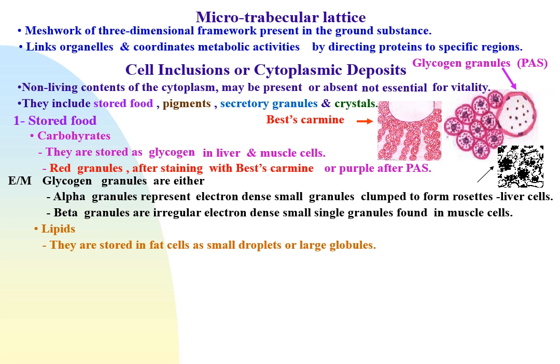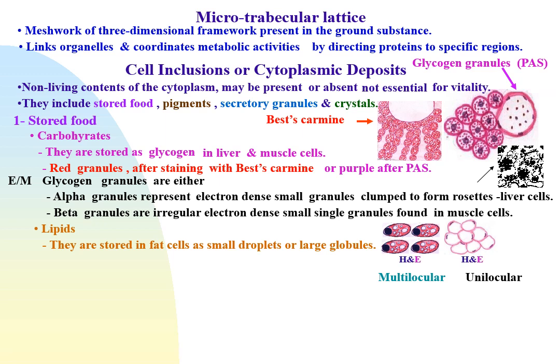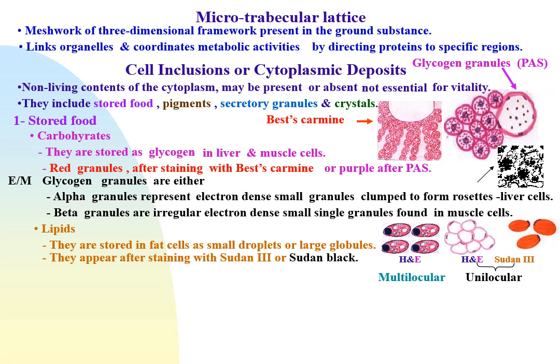Lipids are stored chiefly in fat cells, but many other cell types also store lipid droplets of various sizes. Lipids are stored either as small droplets, as in multilocular fat cells, or as large globules, as in unilocular fat cells. Lipids dissolve in alcohol during hematoxylin and eosin preparation and appear as empty spaces. They can be demonstrated by other stains: orange by Sudan III, or black by Sudan Black.